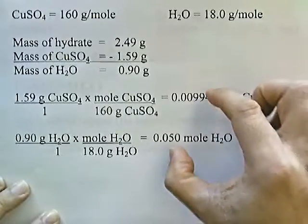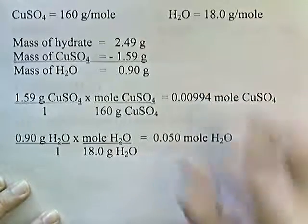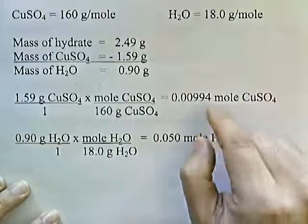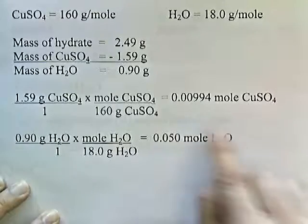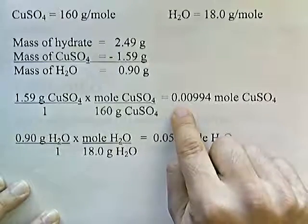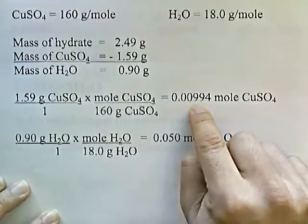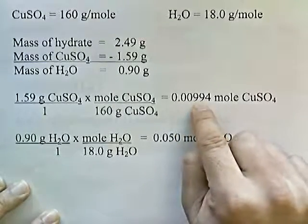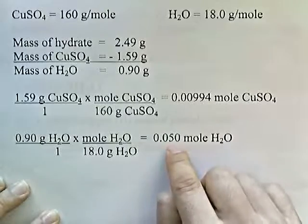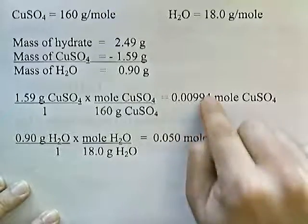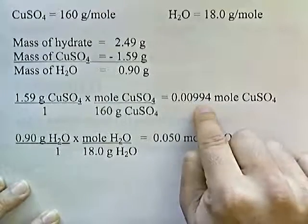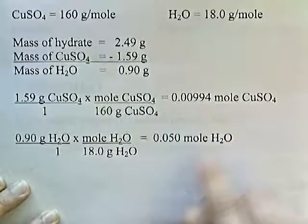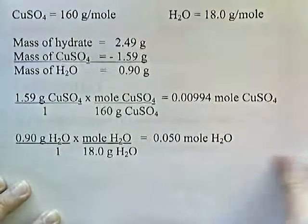So we're going to take these values and divide them by the smallest number of moles. 0.00994 is smaller than 0.05, so we're going to divide both of these numbers by 0.00994.